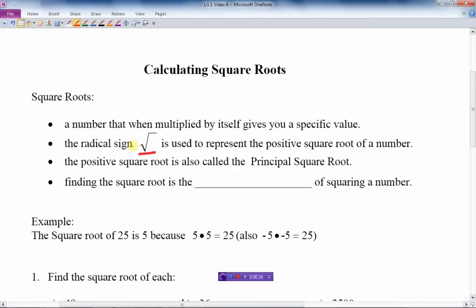However, this positive square root of a number is also called the principal square root, because not only does positive 2 times positive 2 give you 4, but also negative 2 times negative 2 gives you 4. There's two square roots. One's positive, one's negative, but the principal square root is the positive number.